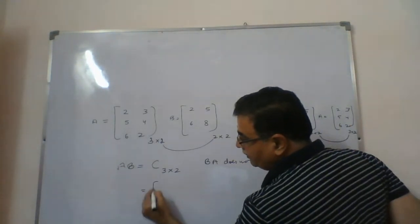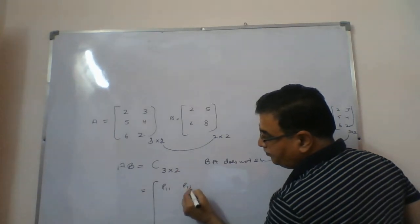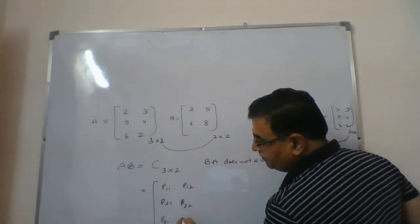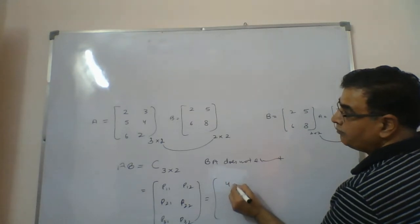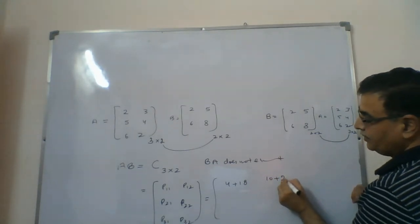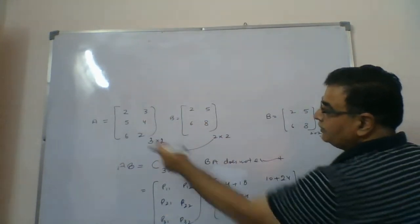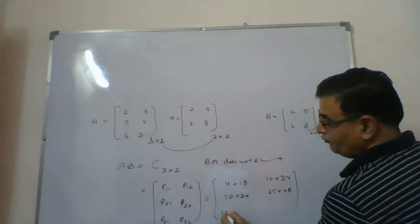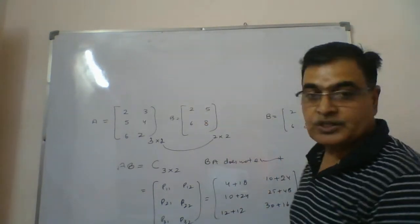Now calculating AB, which gives a 3×2 matrix with elements p11, p12, p21, p22, p31, p32. For p11: 2×2 + 3×6 = 4 + 18 = 22. For p12: 2×5 + 3×8 = 10 + 24 = 34. For p21: 5×2 + 4×6 = 10 + 24 = 34. For p22: 5×5 + 4×8 = 25 + 32 = 57. For p31: 6×2 + 2×6 = 12 + 12 = 24. For p32: 6×5 + 2×8 = 30 + 16 = 46. This is how you complete the multiplication.